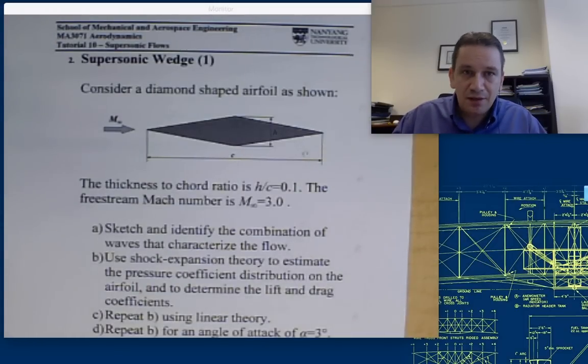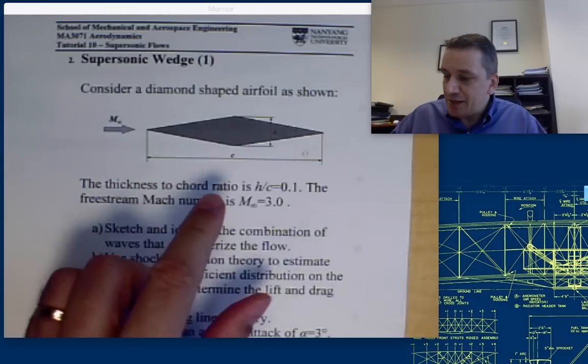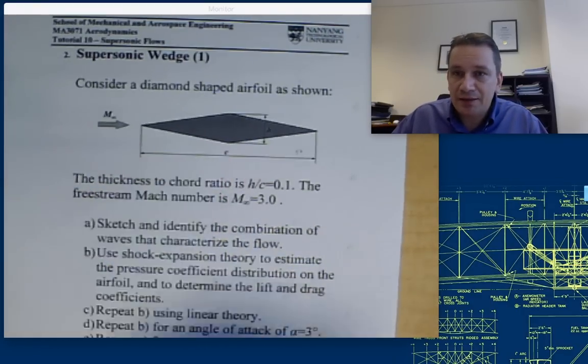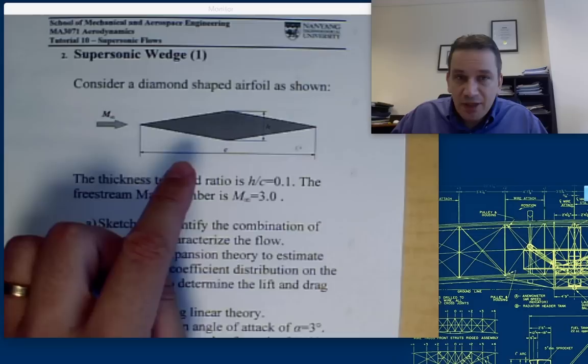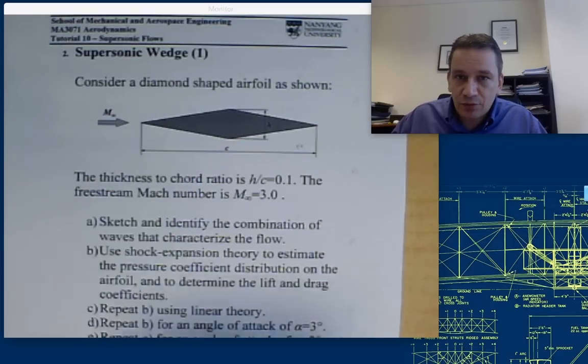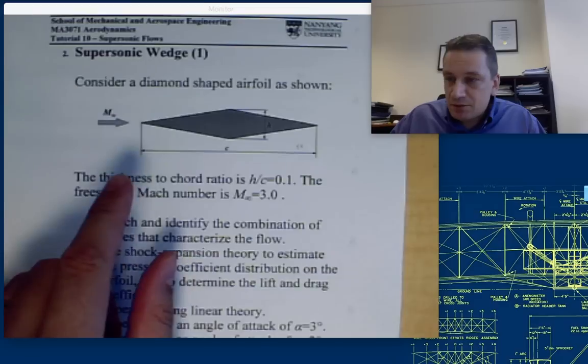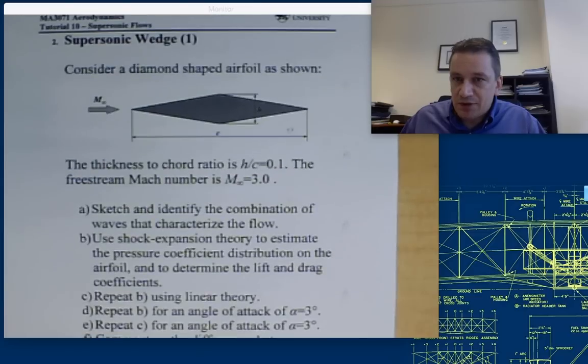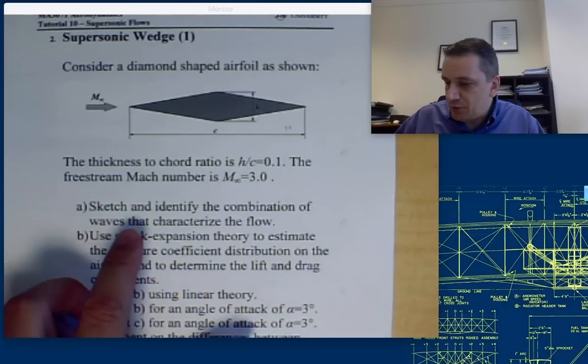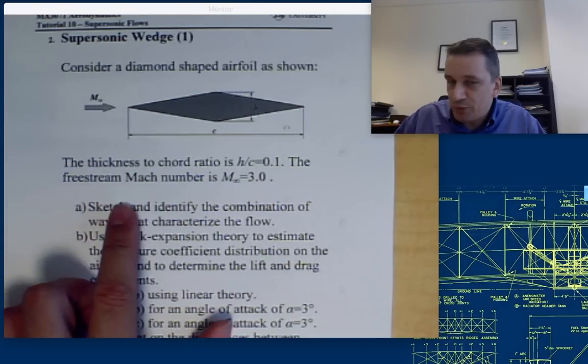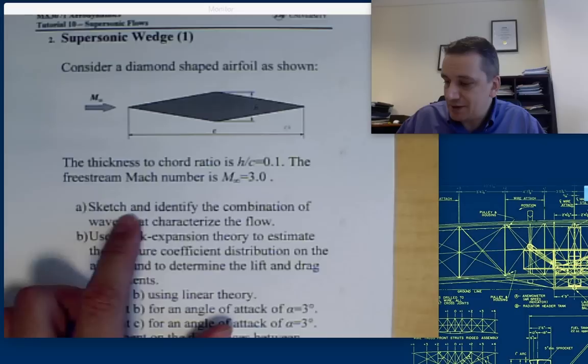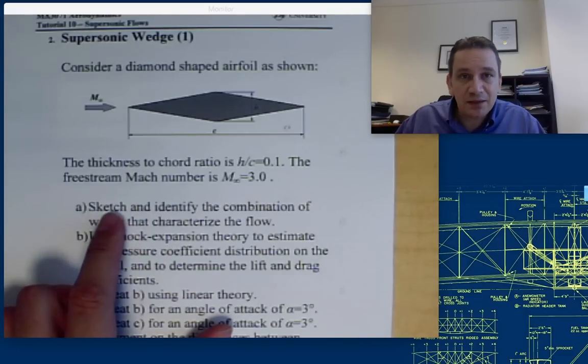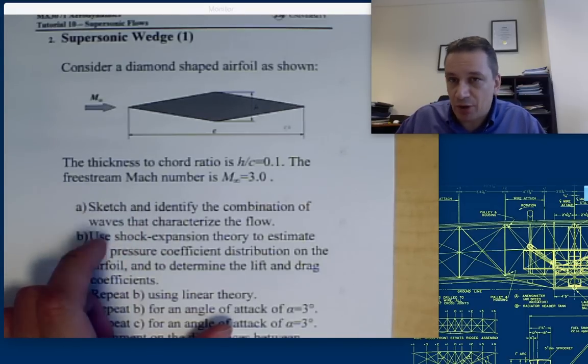Alright, ladies and gentlemen, in this part of the exercise we want to have a look now at a diamond-shaped airfoil. The diamond-shaped airfoil has a thickness-to-chord ratio of 0.1, and it's going to be exposed to a free stream Mach number of 3. Now we would like to know the same thing as we always usually would like to know. We would like to know the pattern of waves that you can find around this airfoil.